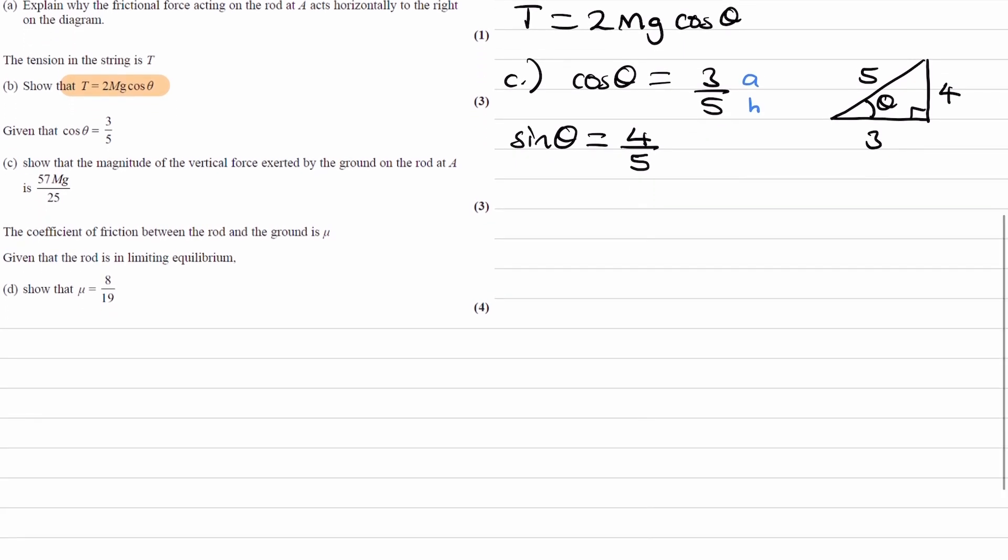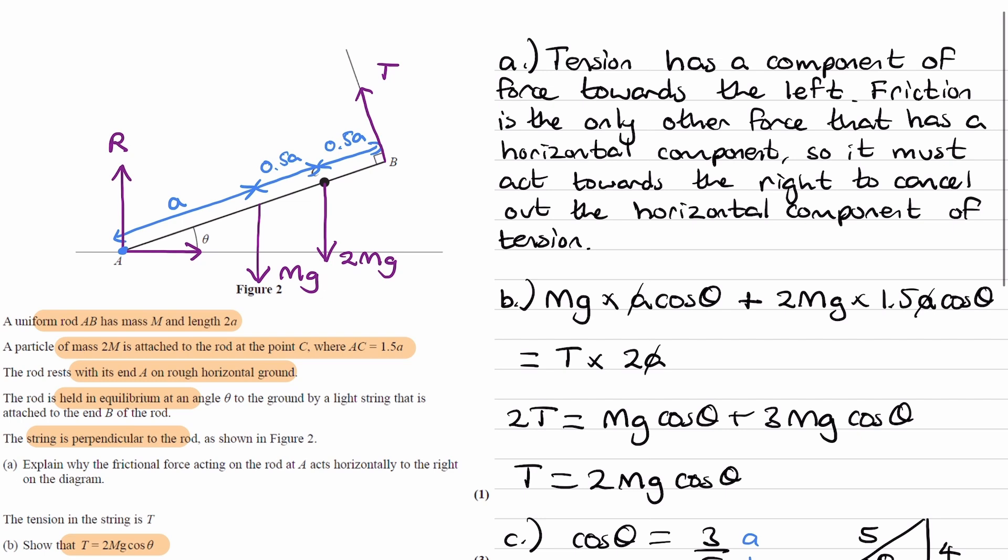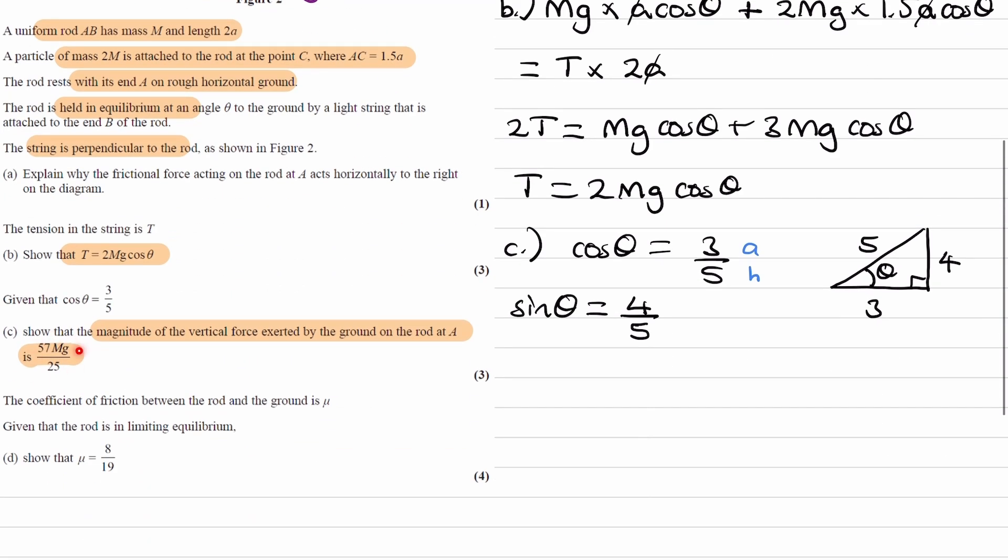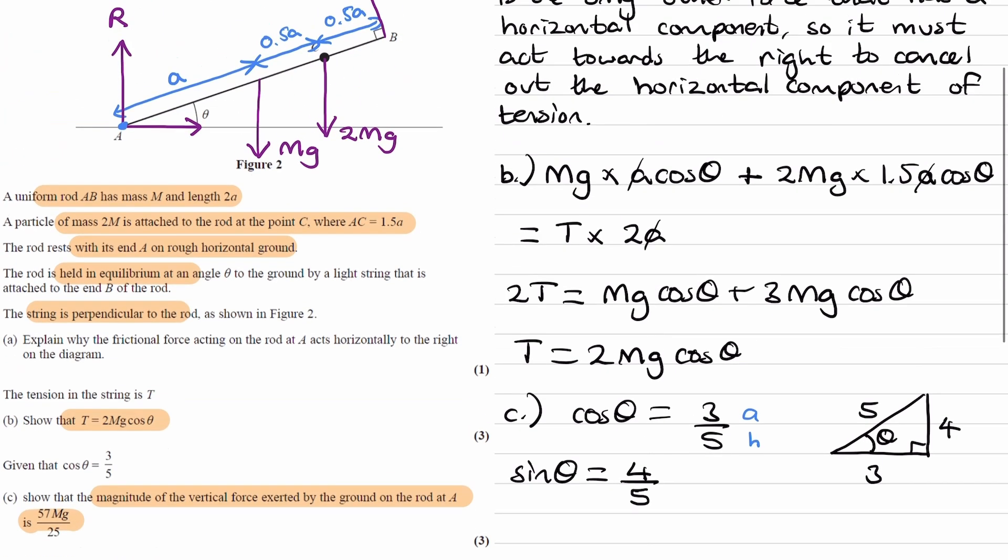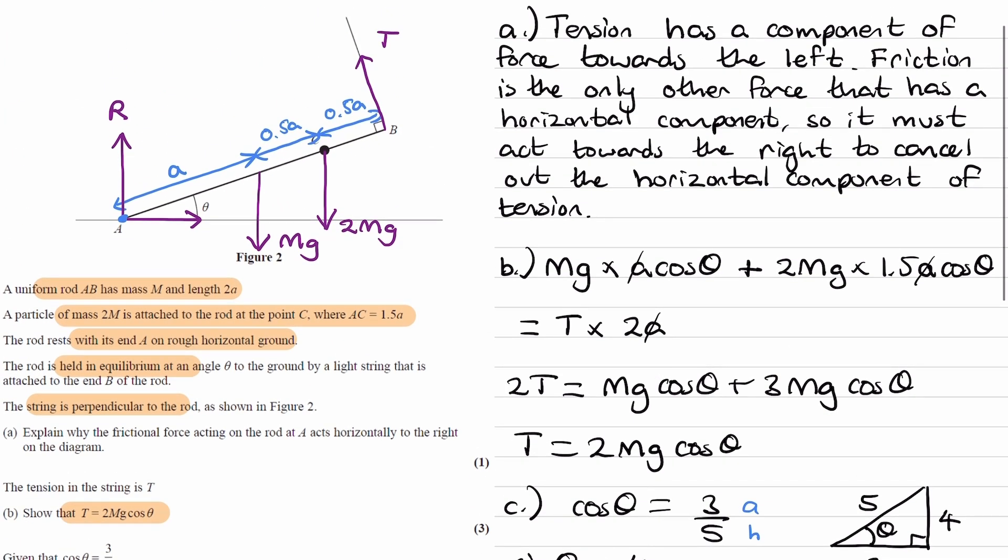Part C says show that the magnitude of the vertical force exerted by the ground on the rod at A is this. So that basically means we're trying to show that R is equal to 57mg over 25. Easiest way to work this out is to do upward forces equal downward forces.